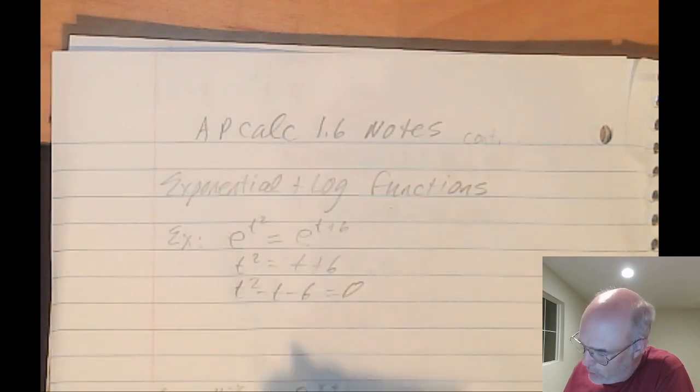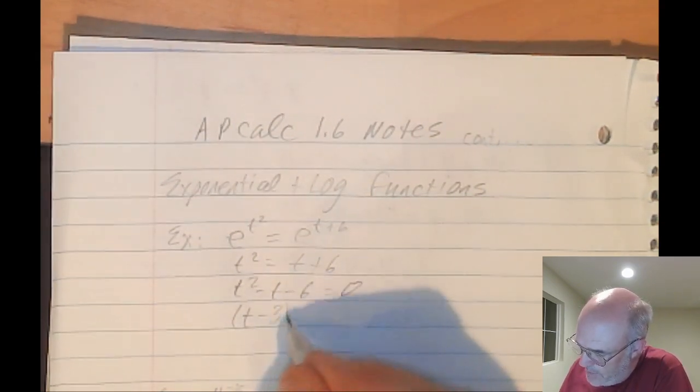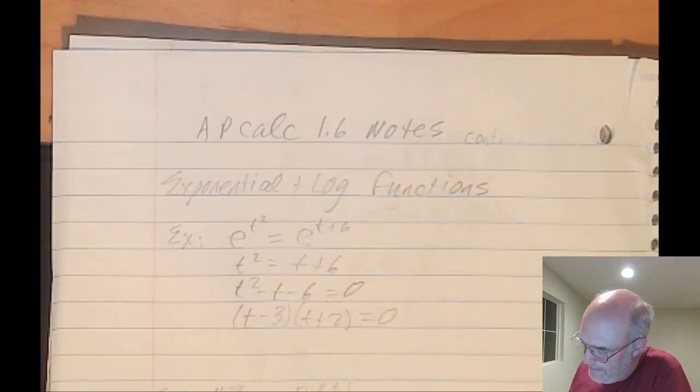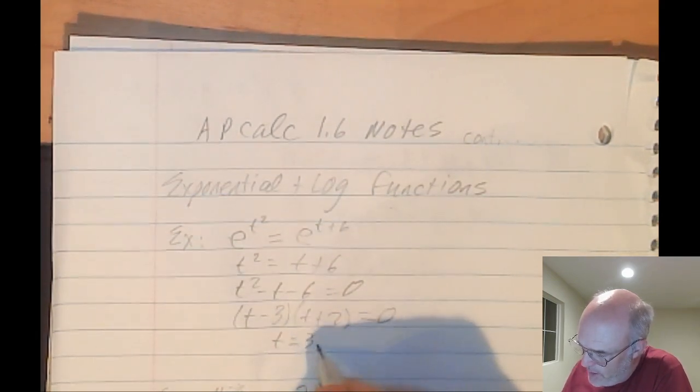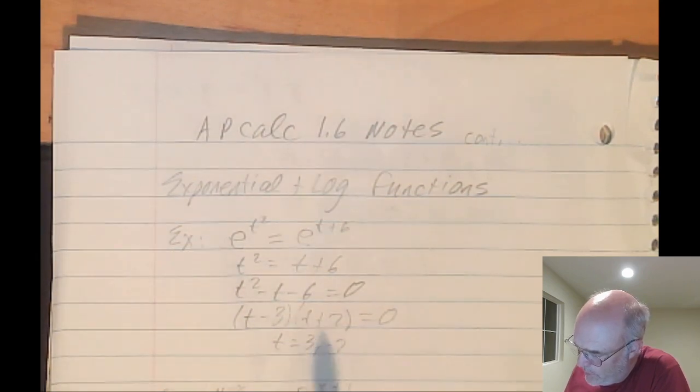This is from algebra one. I don't know, t minus 3, t plus 2, that looks pretty good, doesn't it? And so t equals 3 or negative 2. And we're looking good.